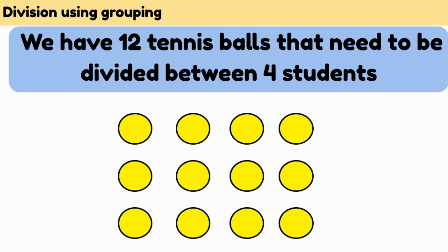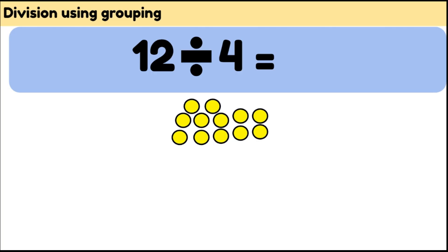Let's try a word problem. We have 12 tennis balls that need to be divided between 4 students. Our problem is going to look like this: 12 divided by 4. We're going to figure out how many groups of 4 we can make from our 12 tennis balls.